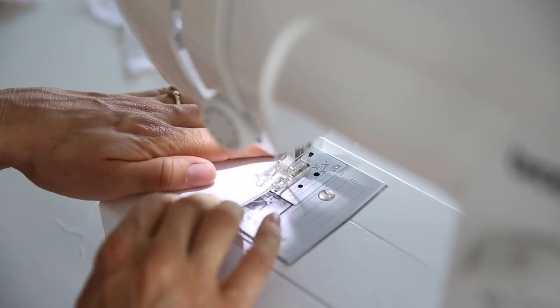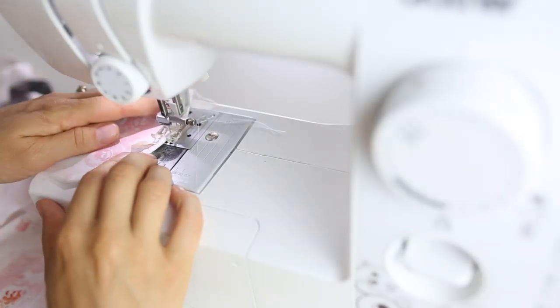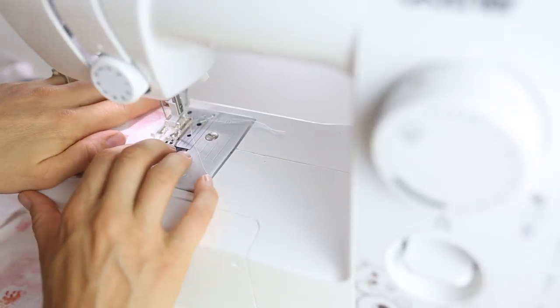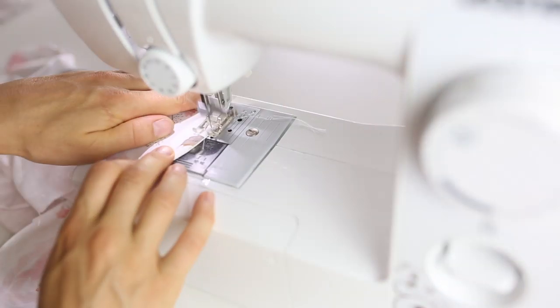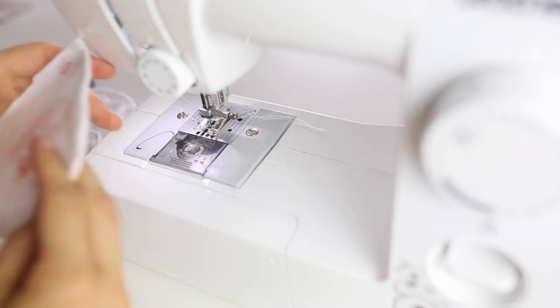After your bunting pieces are all sewn together turn them right side out and press the seams flat. Next do a top stitch close to the original seam around each of the bunting pieces. The purpose of this top stitch is to make the seams lay even flatter.